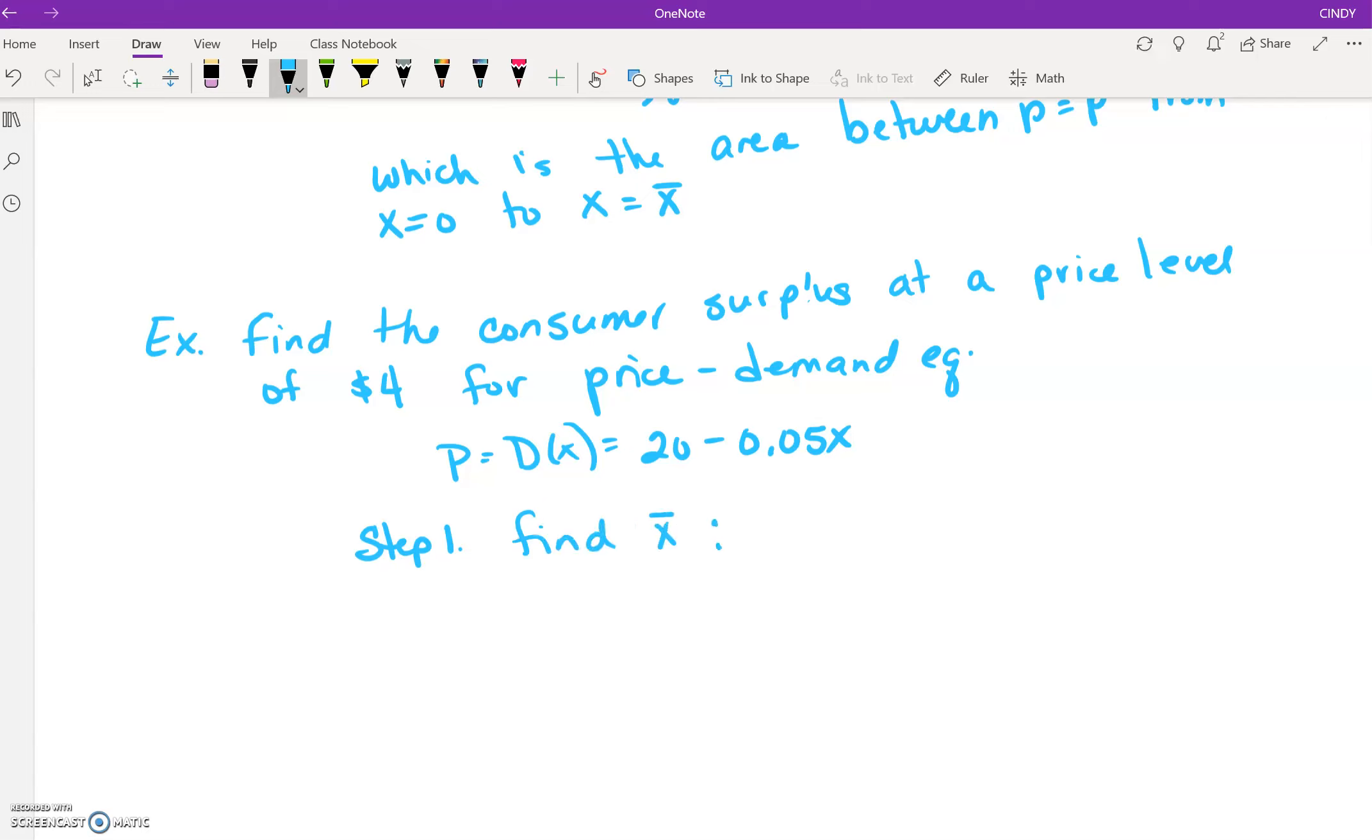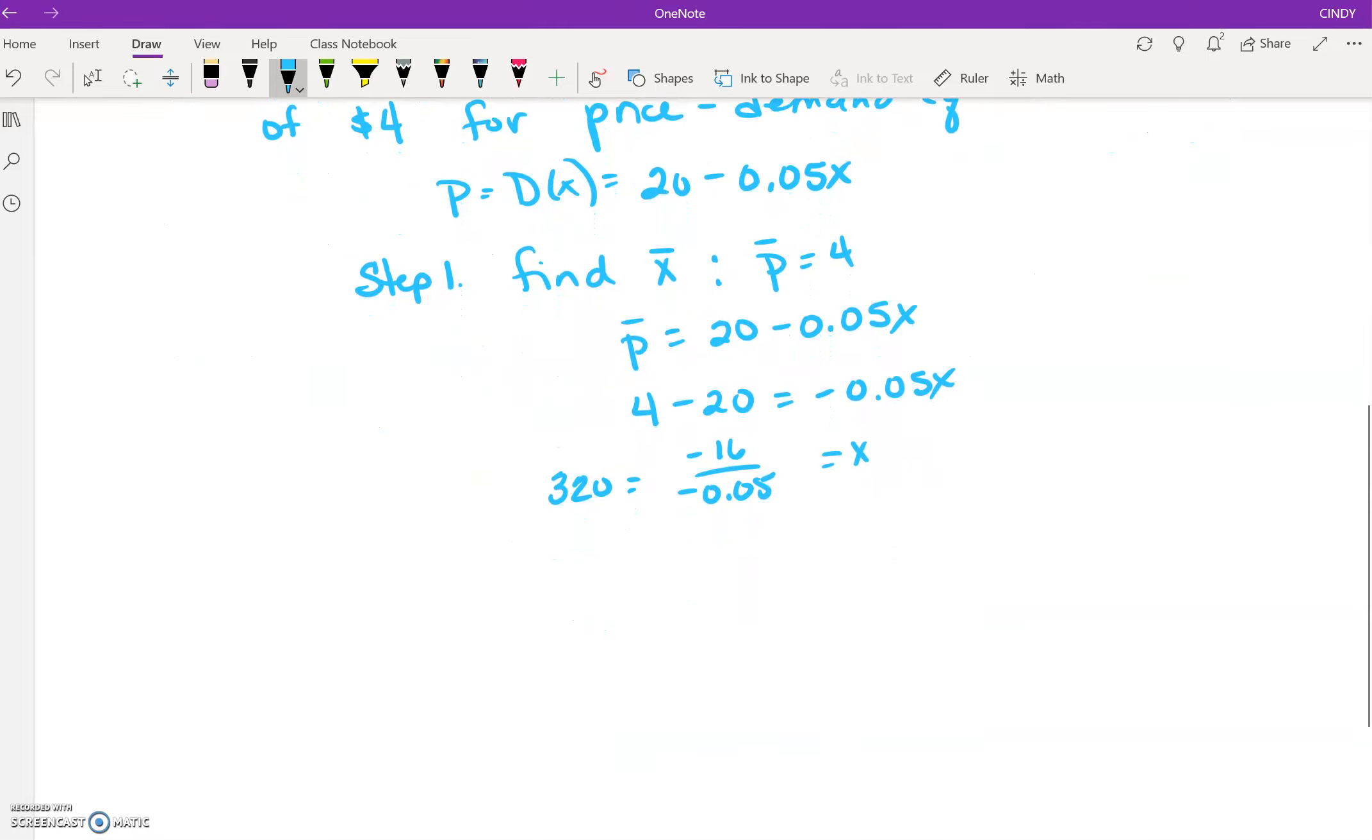Given that price level, which is p̄ equals 4. So that tells me p̄ equals 20 minus 0.05x̄. And we're going to solve for x̄. So I get just a little bit of algebra. At a price point of 4, we're going to subtract 20 from both sides, then divide by negative 0.05. That gives me 320.